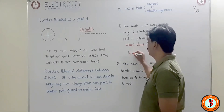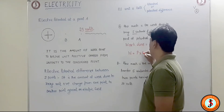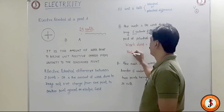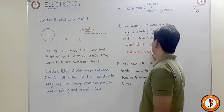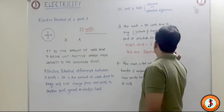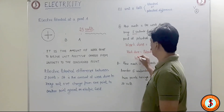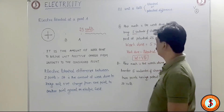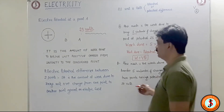So we can get an equation: work done is equal to potential into charge in Coulombs. W is equal to V into Q. So electrical work done is equal to potential into charge in Coulombs.